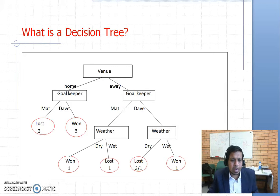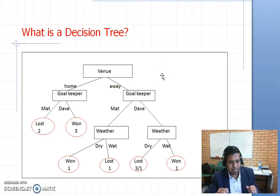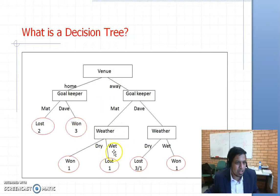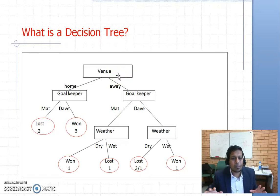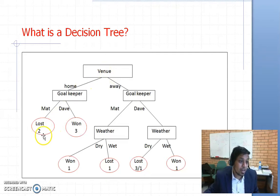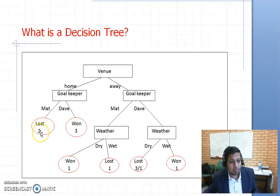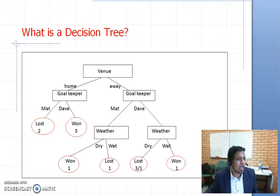The beauty of these decision tree algorithms is that you do not need any preconceived or pre-assumed knowledge, unlike many traditional data analysis methods. The decision tree extracts knowledge from the data set and tries to classify the class attribute or label — which in the previous data set was the result. Here in this tree you can see it is trying to find out the reasons why sometimes they lost and sometimes they won, purely based on the data set. For example, on the very left-side leaf, it says that if the venue is home and the goalkeeper is Mat, then the result is lost — and there were two such occasions.